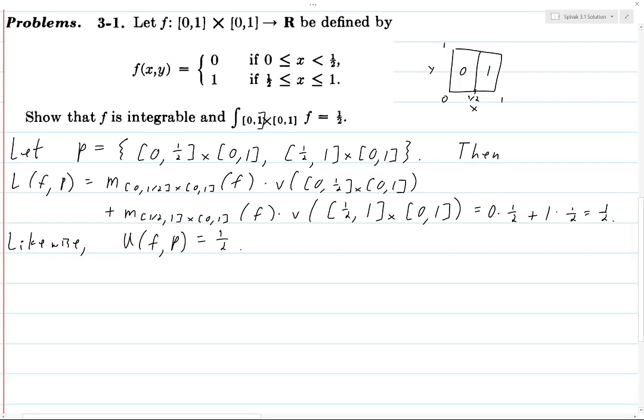So 1/2 is the lower sum of f at this particular partition p, but now we know that this is certainly going to be less than or equal to the supremum over all lower sums. You take the supremum over all partitions of the lower sum of f at that partition.